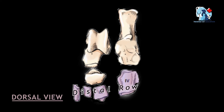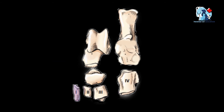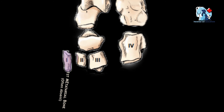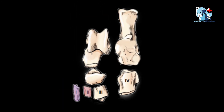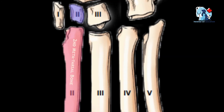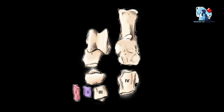The distal row comprises four bones: the first, second, third, and fourth tarsal bones, with numbering starting from medial to lateral. The first tarsal bone is flattened in shape and articulates proximally with the central tarsal bone, distally with the first metatarsal bone, and laterally with the second tarsal bone. The second tarsal bone is wedge-shaped and articulates proximally with the central tarsal bone, distally with the second metatarsal bone, medially with the first, and laterally with the third tarsal bone.